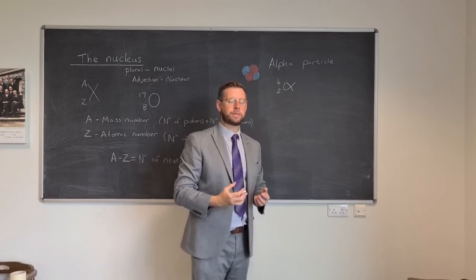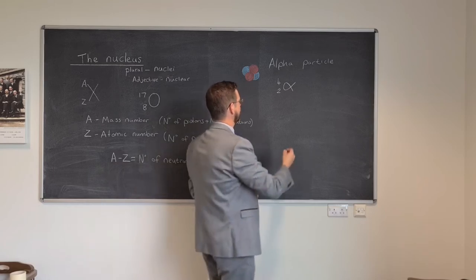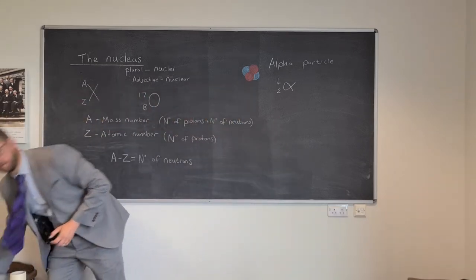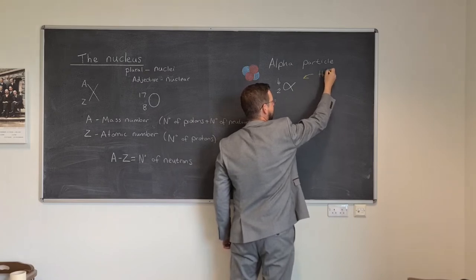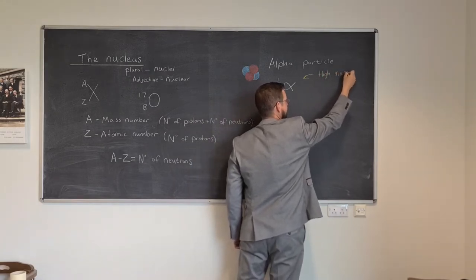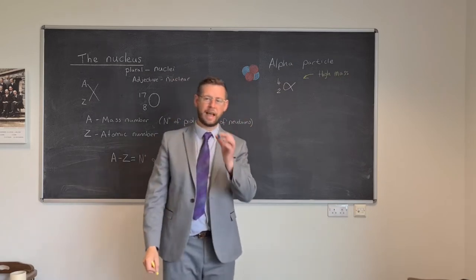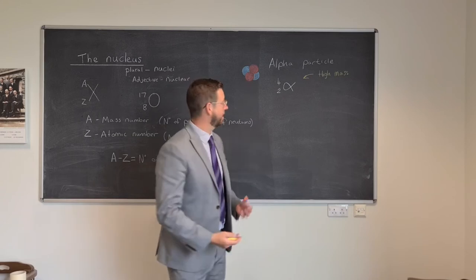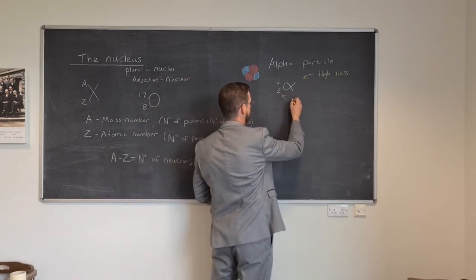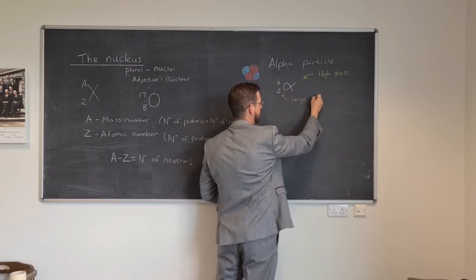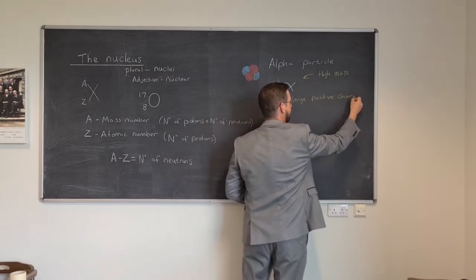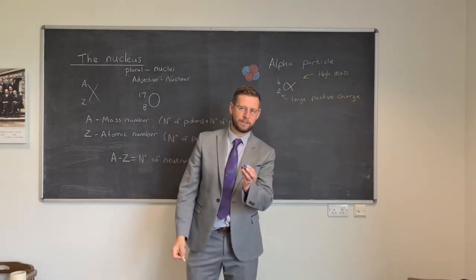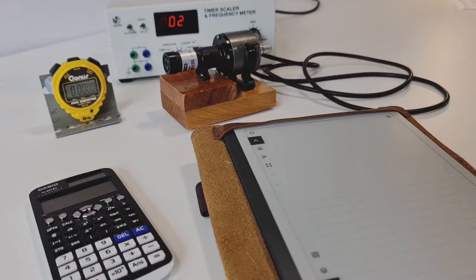This leads to certain properties. If we look, it has a mass of four. This we could describe as a high mass compared to other particles. The alpha particle has loads of mass. It also has a large positive charge, charge twice as much as a single proton. That makes the alpha particle a bit of a bully. To understand what alpha particles are like, we need to do an investigation where we detect them.